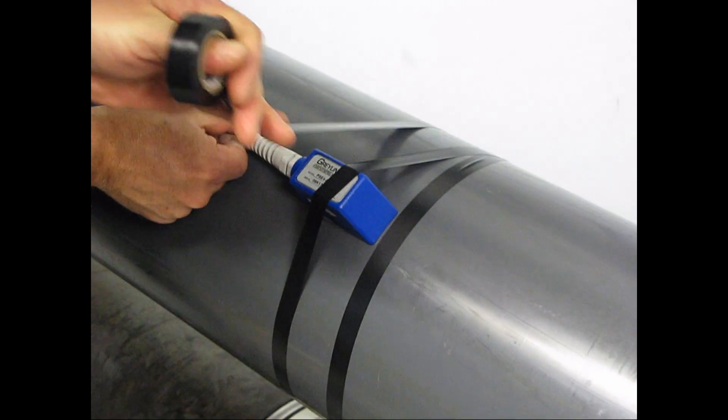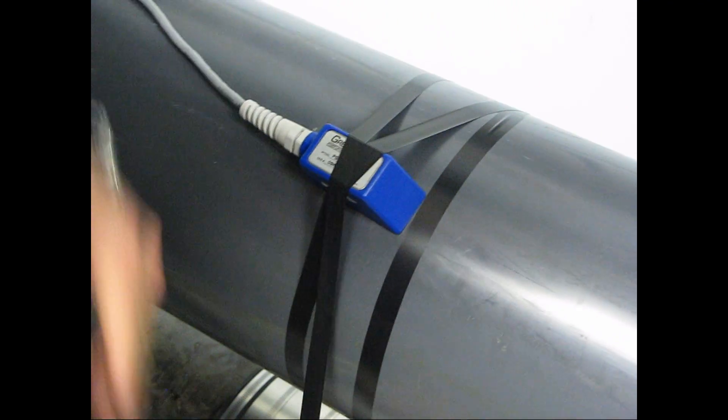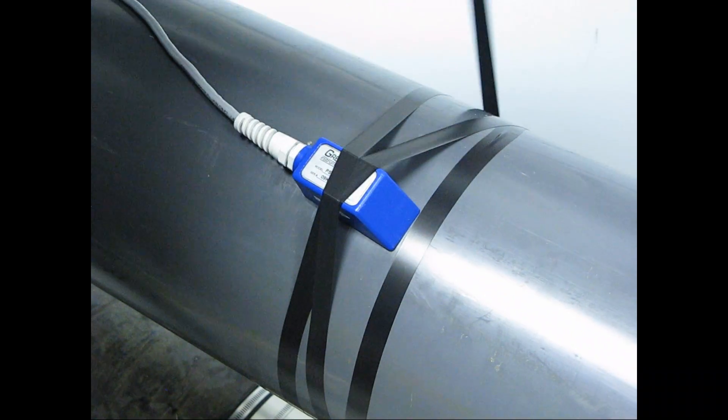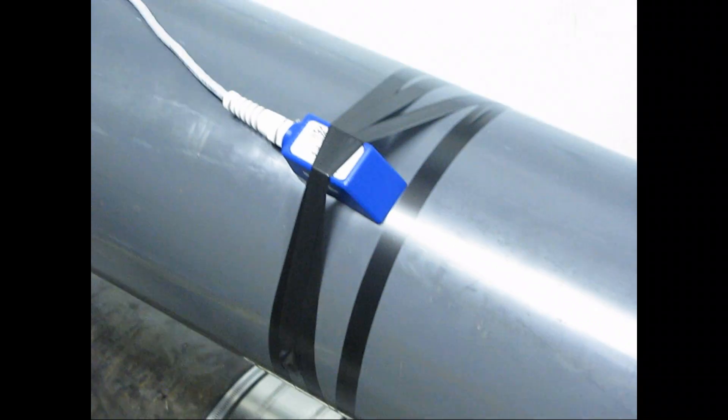Apply a couple of loops of tape to secure the sensor in place and then break off the tape. You're now ready to read flow.